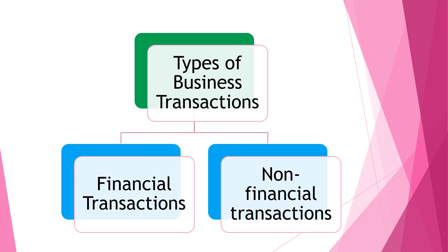There are two types of business transactions: financial transactions and non-financial transactions. Financial transactions are those activities that change the value of an asset, liability, or equity. Examples include receiving cash from a client as advanced payment for repairing their washing machine, or payment of utilities like a water bill or electricity bill. Another example is when your company buys a printer for your office at the amount of 6,000 pesos.